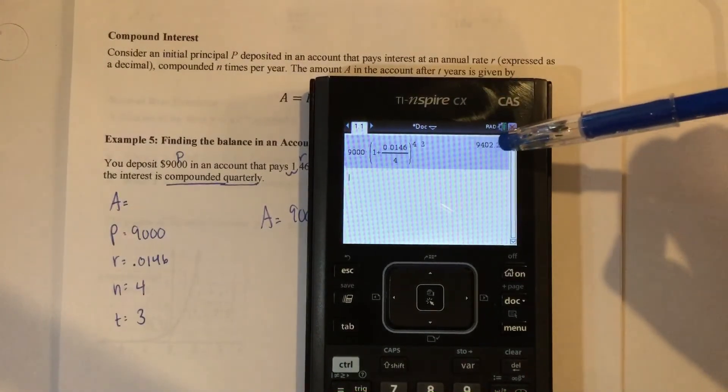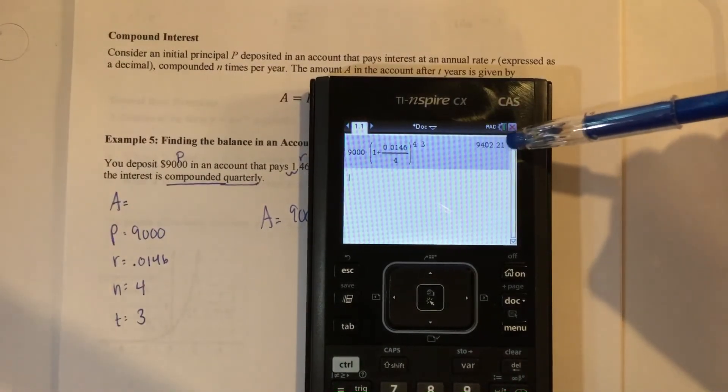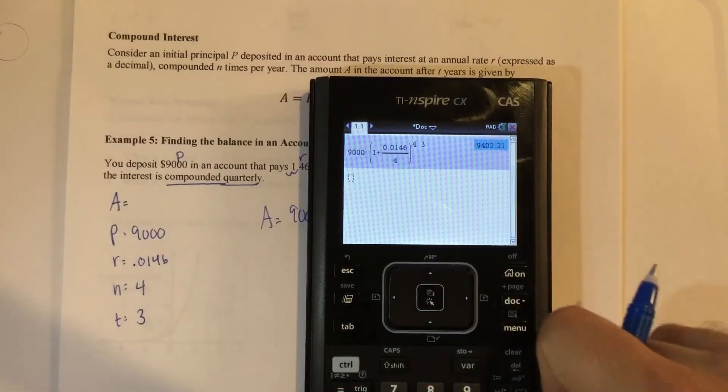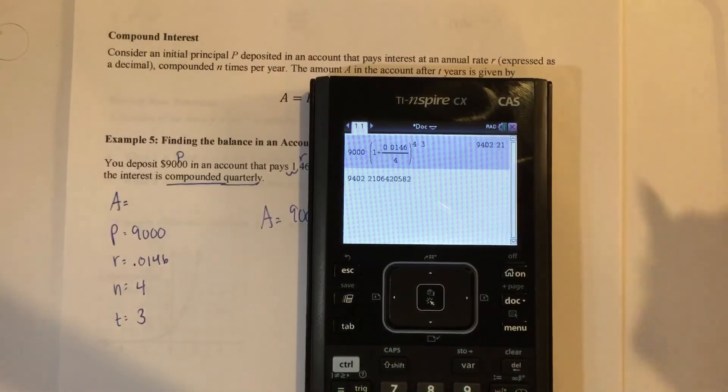One thing I always like to do is sometimes I feel like this number is not always correct. So just go back up, arrow it, hit enter, make sure it does it correctly.